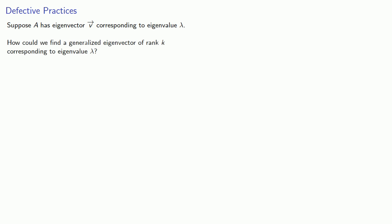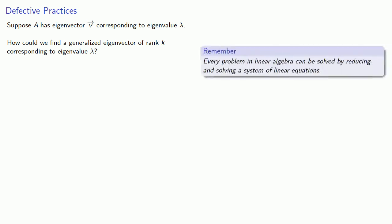Suppose matrix A has eigenvector v corresponding to eigenvalue lambda. How could we find a generalized eigenvector of rank k corresponding to eigenvalue lambda? To answer this question, it's helpful to remember every problem in linear algebra can be solved by reducing and solving a system of linear equations.